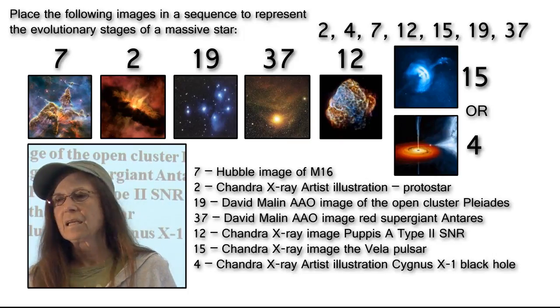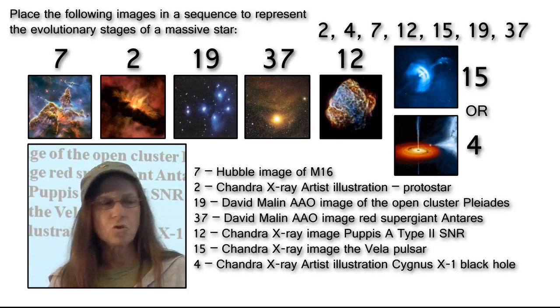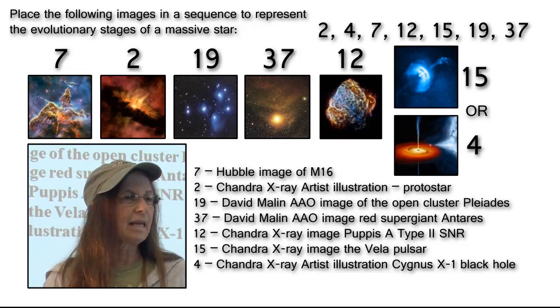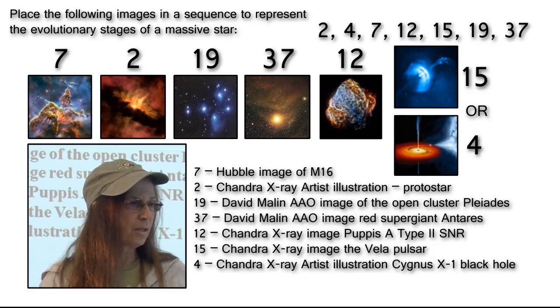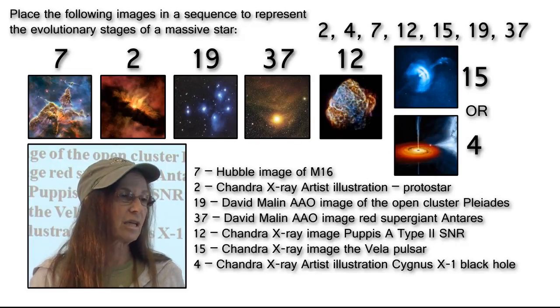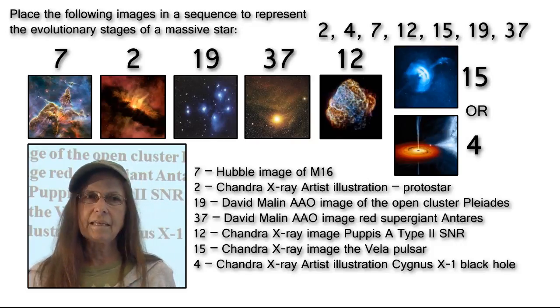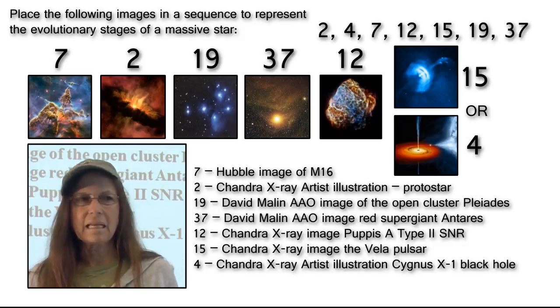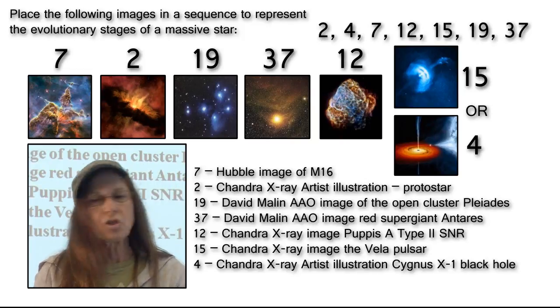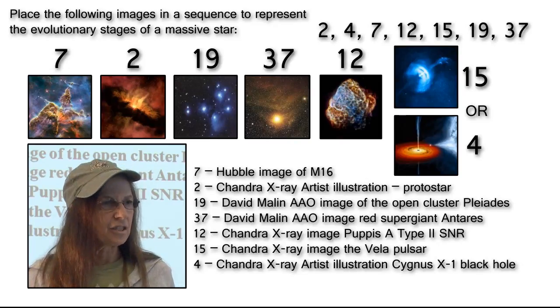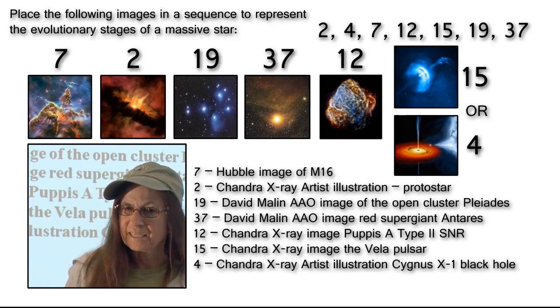Next, we have Puppis A. This is a Chandra image of a Type II supernova remnant. Type II supernova remnants can contain either a pulsar, which is number 15, a Chandra X-ray image of a pulsar, or it can be a black hole. Again, this black hole is an artist's illustration of a black hole. But there are actually images in there of actual images of black holes, because the Chandra mission has imaged many of those. This gives you an idea of how you arrange the images in a sequence to show the stages of stellar evolution using specific objects.